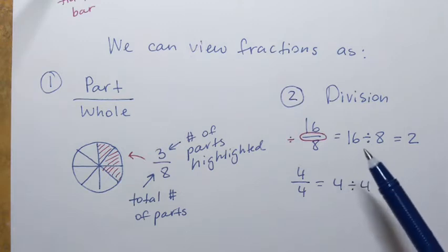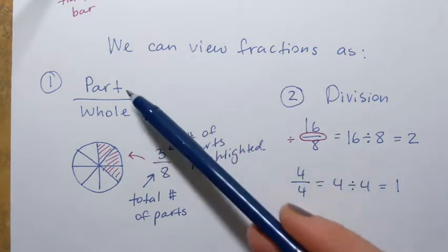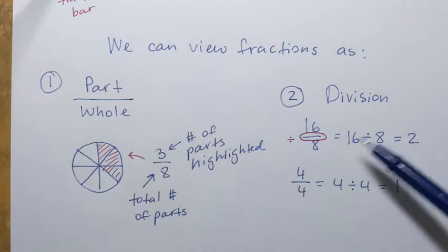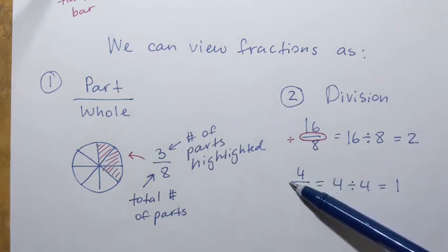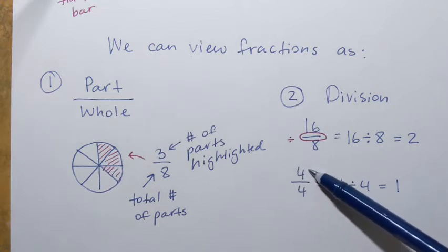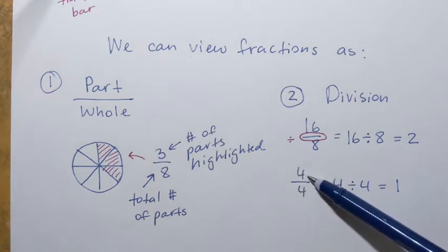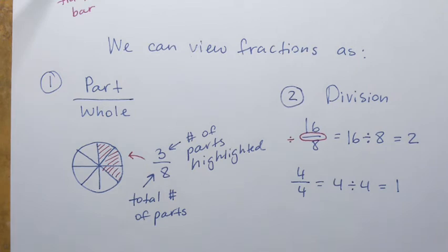But if we treat 4 over 4 as part of the whole, that means the whole has 4 parts and we take all 4 parts — that's everything, that's the whole. So that's why we get 1, representing the whole.